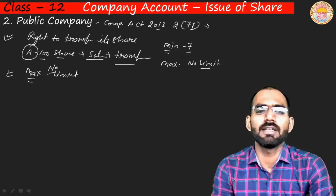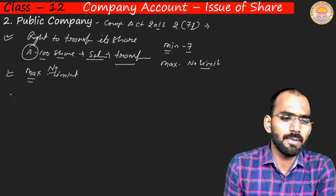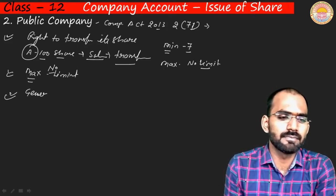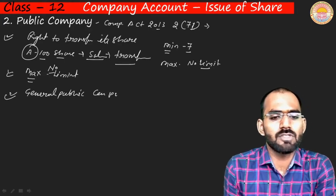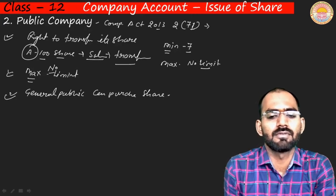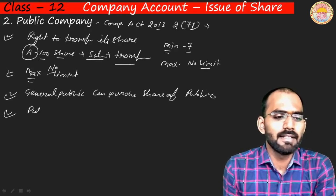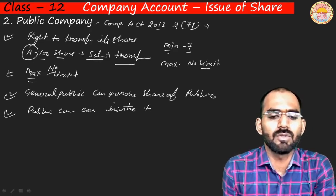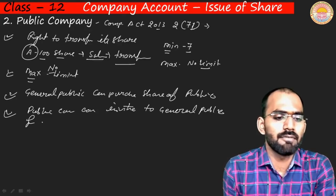The maximum number of members in a public company has no limit. Unlike a private company which cannot invite the general public, a public company plays a very important role for the general public — the general public can purchase shares of a public company, and the public company can invite the general public to invest or purchase shares.